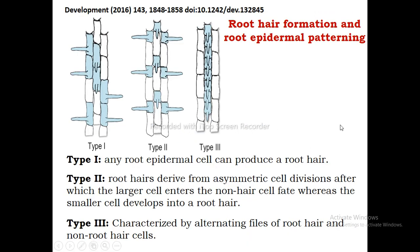There are three main types of root hair distribution, though other patterns also exist. In type 1, root epidermal cells and hair cells have a random arrangement — they are randomly distributed in the epidermis, and any root epidermal cell can produce a root hair. In type 2, the last division is asymmetric.